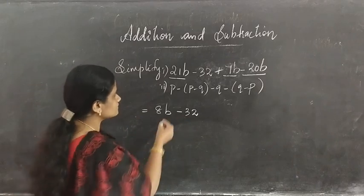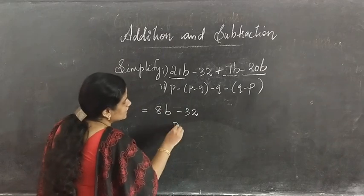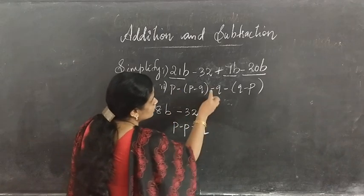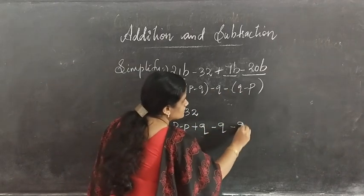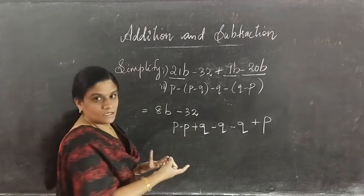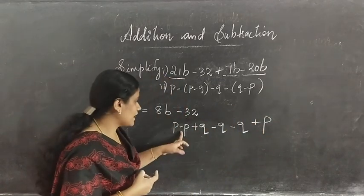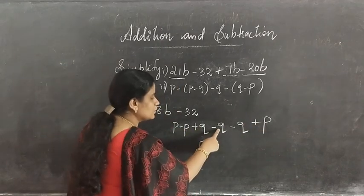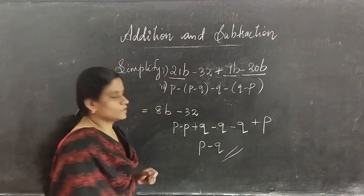The second simplification has brackets. Opening: p minus into plus gives minus p, minus into minus gives plus q, then minus q. Opening the next bracket: minus into plus gives minus q, minus into minus gives plus p. So we have: p minus p is 0, plus p gives 1p; q minus q is 0, minus q remains. So p minus q is the simplified form.